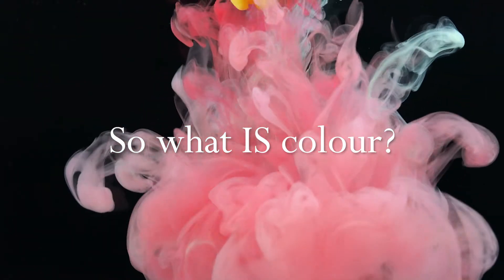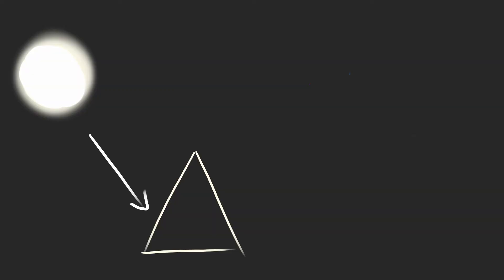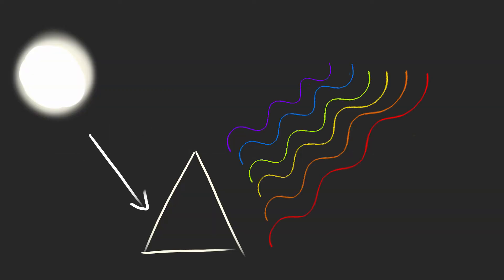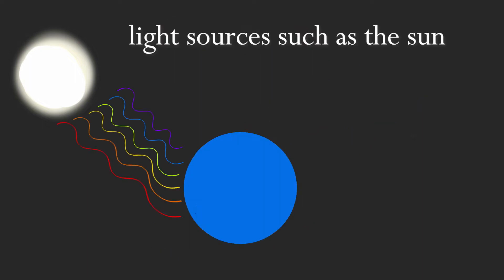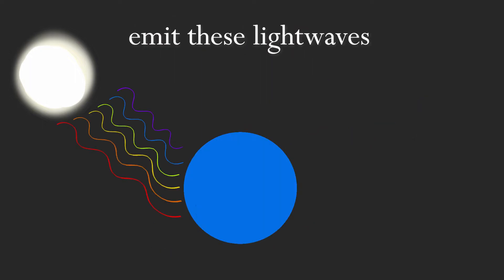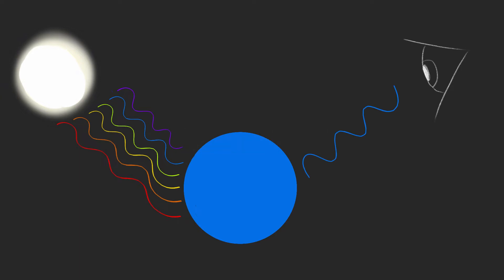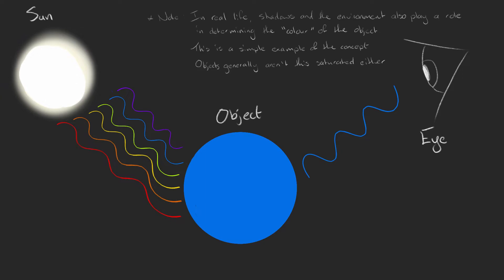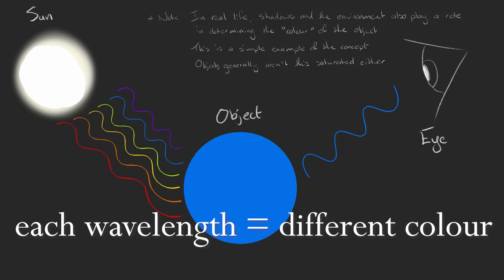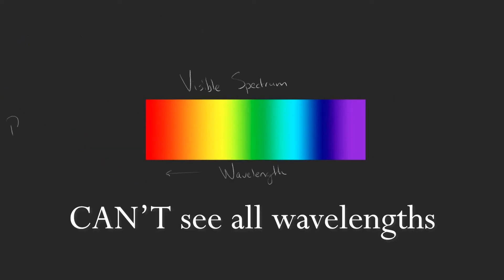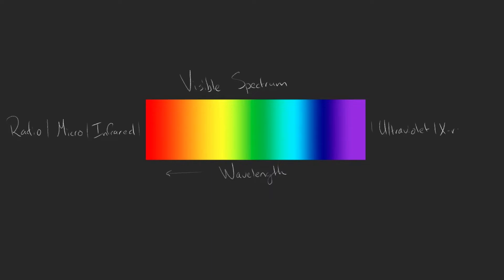So, what is colour and how do we perceive it? Light is made up of waves, and each wave has a different wavelength — the distance between the top of each wave. Light sources such as the sun emit these light waves. When light waves hit an object, some wavelengths are absorbed and converted to heat, while others bounce off the object and hit our eyes. This is why you feel warmer in black clothing, because black is produced when all the light waves are absorbed and converted to heat. Our eyes then interpret each wavelength as a different colour. However, we can only see the wavelengths in what's known as the visible spectrum.